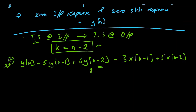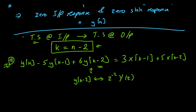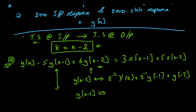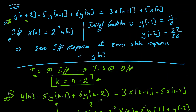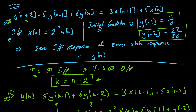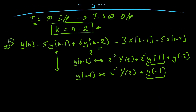For the second-order delay term, the Z-transform of Y of K minus 2 is Z-squared-inverse times Y of Z plus Z-inverse times Y of minus 1 plus Y of minus 2. Similarly, the Z-transform of Y of K minus 1 is Z-inverse times Y of Z plus Y of minus 1. Substituting the given values: Y of minus 1 equals 11/6 and Y of minus 2 equals 37/36.